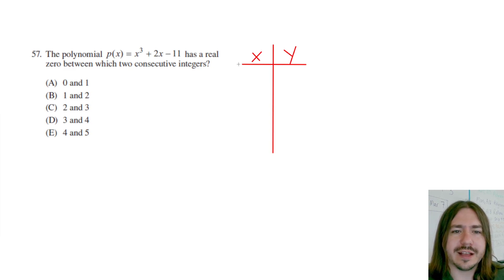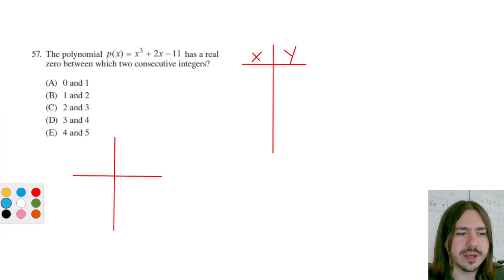So the x-intercept is going to appear—let's just graph some wild function here. This is not the graph of this particular function. But let's just say you have something that does something like this.